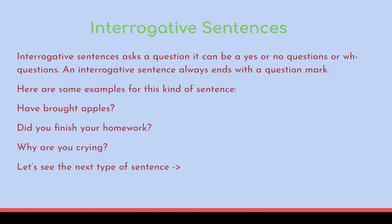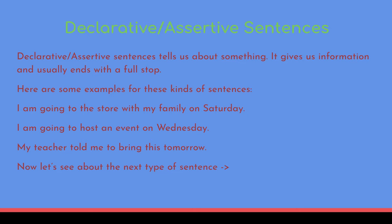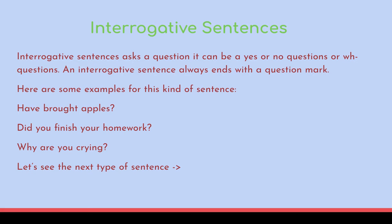Here are some examples: 'Have you bought apples?' — this is a yes or no question. 'Did you finish your homework?' — also a yes or no question. 'Why are you crying?' — this is a WH question, because 'why' has WH in it. The expression for a question is different from a plain declarative sentence.